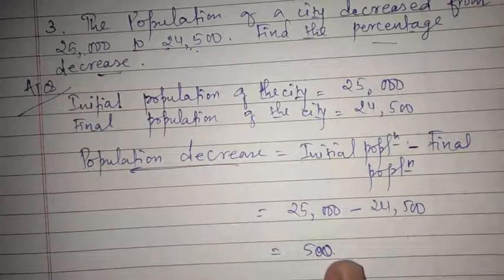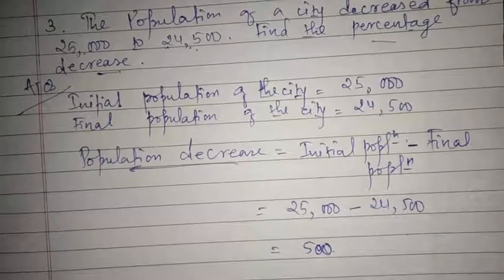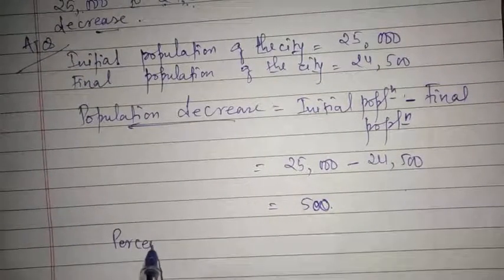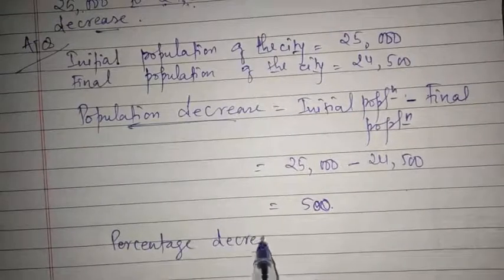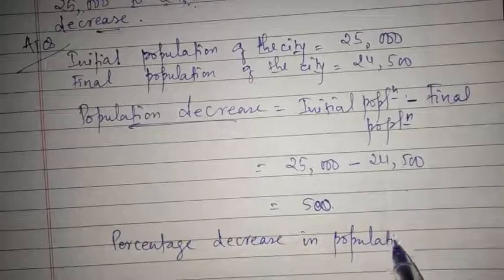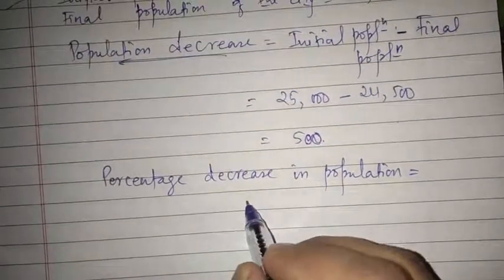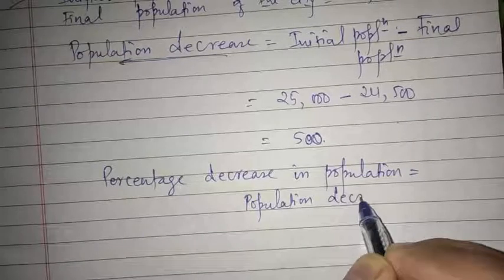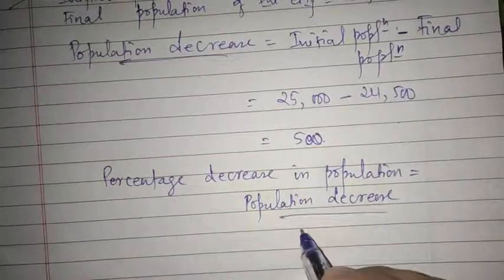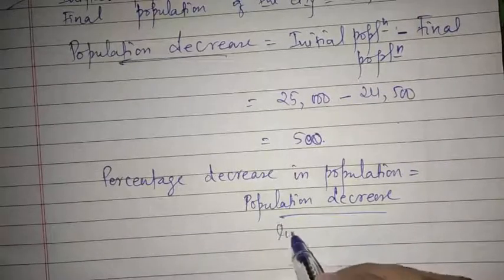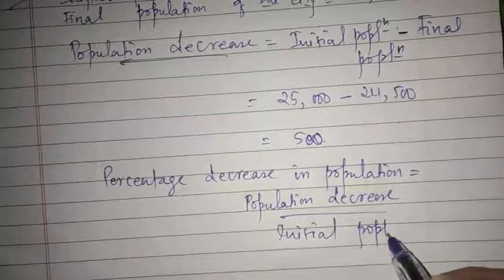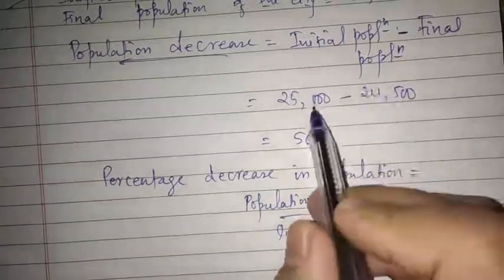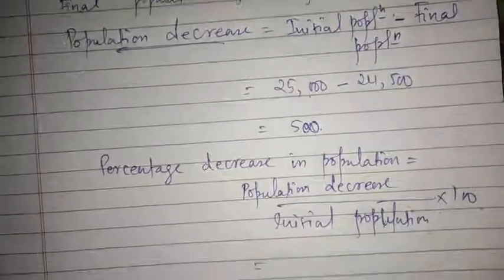Now they have asked us to find the percentage decrease. To find the percentage of decrease in population, we use the formula: percentage decrease = (population decrease ÷ initial population) × 100. The population decrease is 500 and the initial population is 25,000, so it is 500 divided by 25,000 into 100.